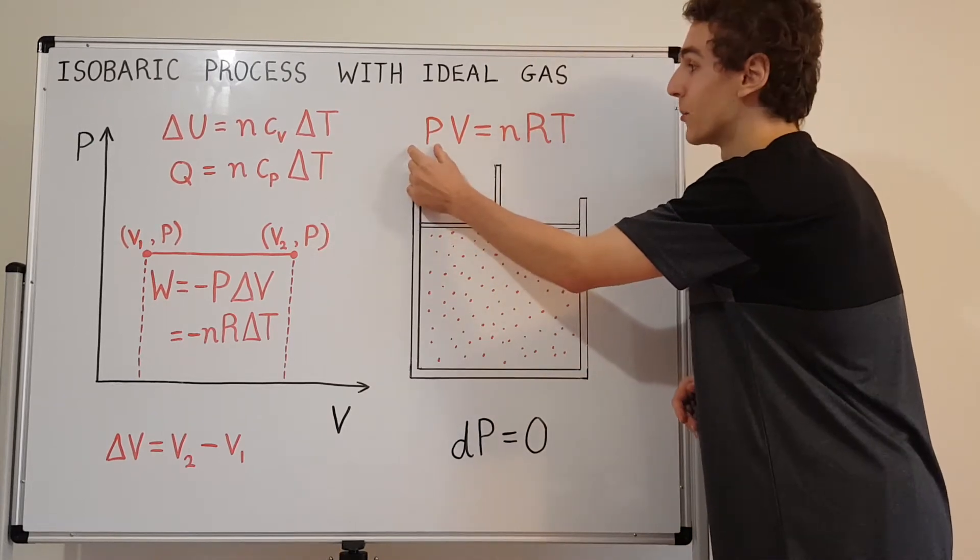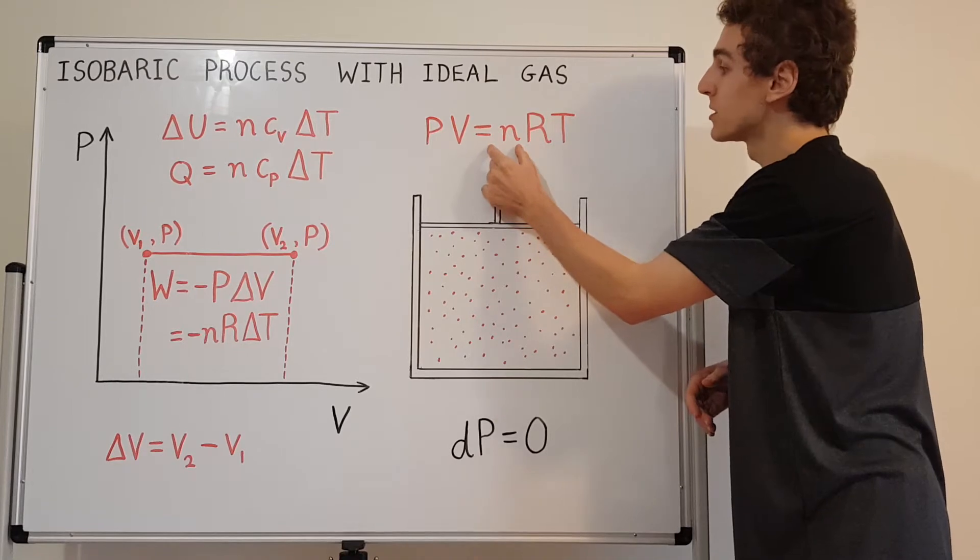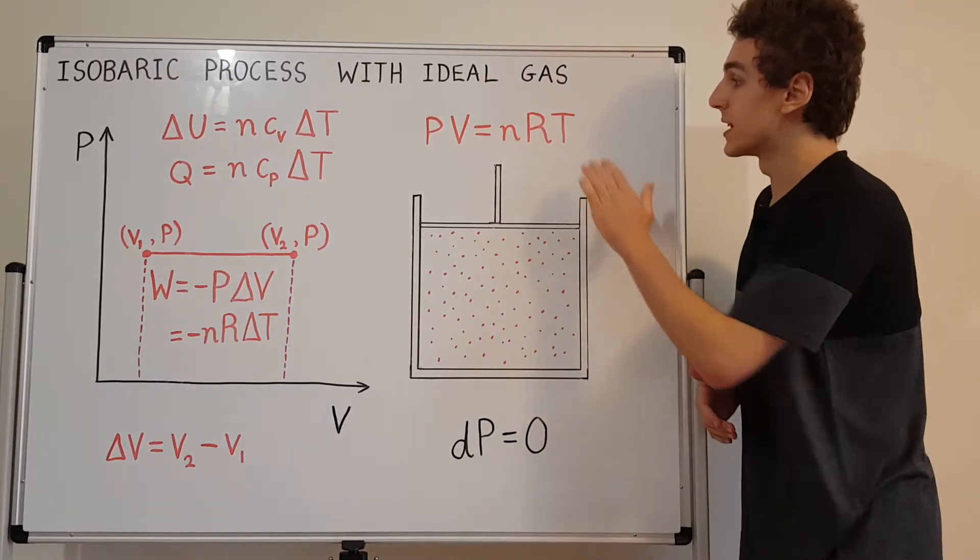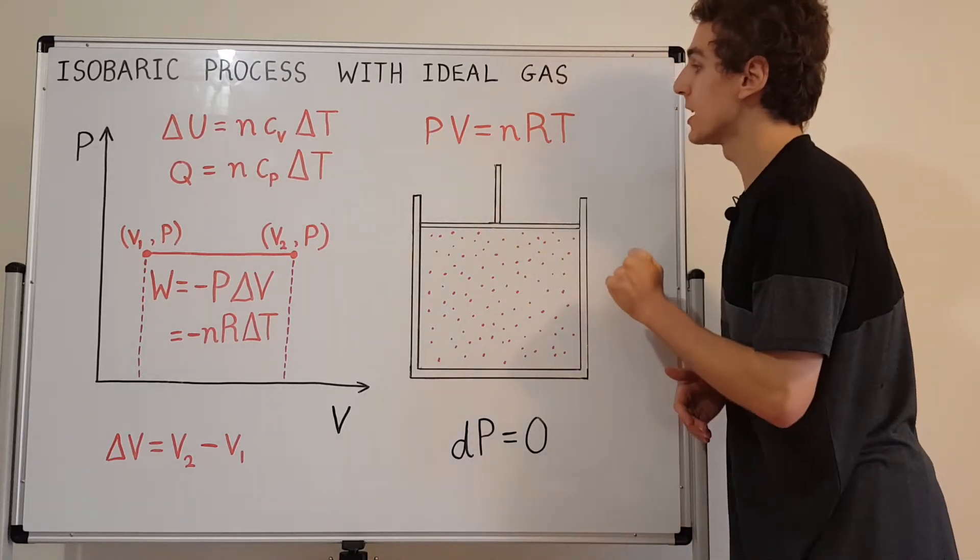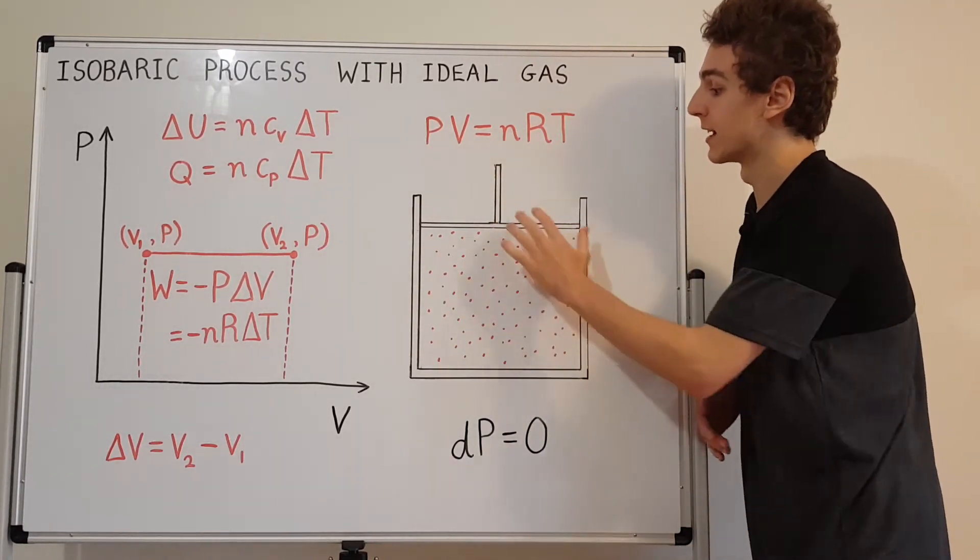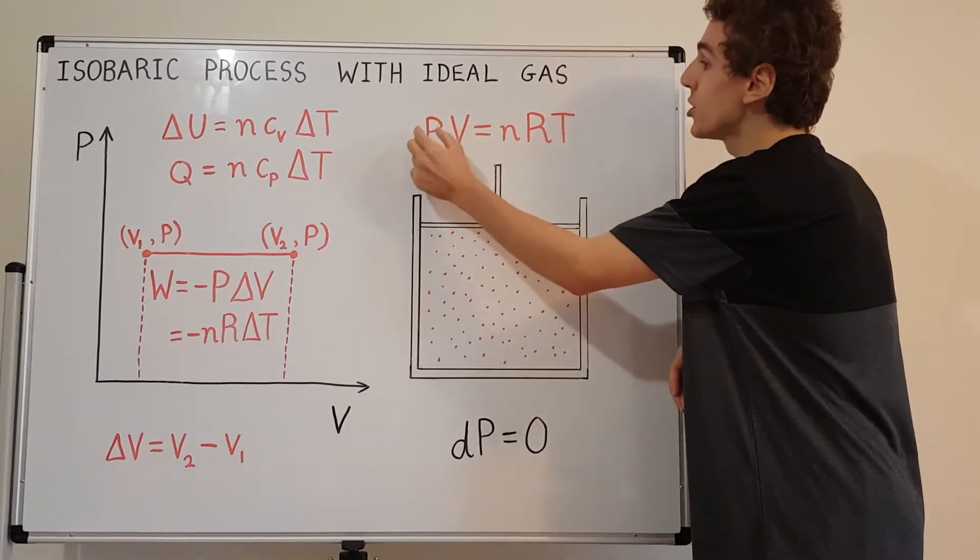We've got volume. Here n is the number of moles. R is the gas constant and T is the temperature. So the temperature can change. The volume can change. The number of moles is fixed because this is a closed container. So there's no gas leaving or entering. But pressure is constant.